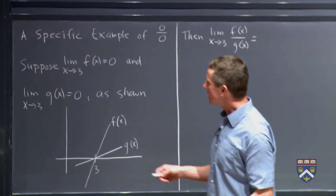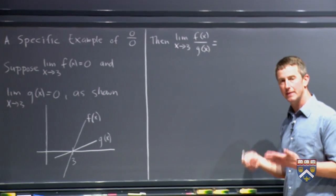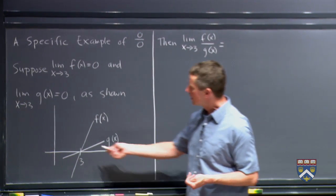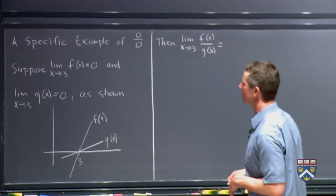So we are trying to find out this limit. The limit as x goes to 3 of f(x) over g(x). But it's one of these indeterminate forms because both of their y values are approaching 0. So let's see what we can figure out from this.